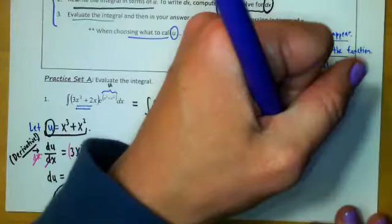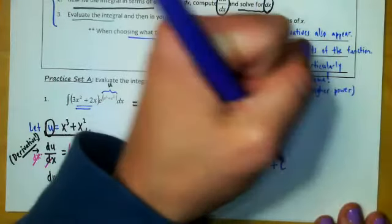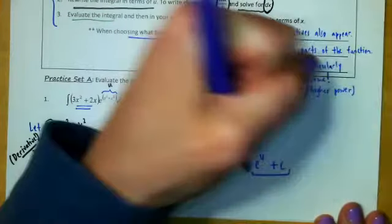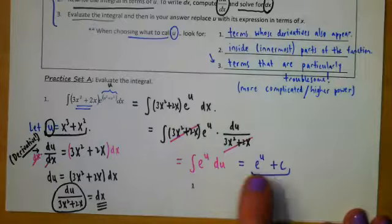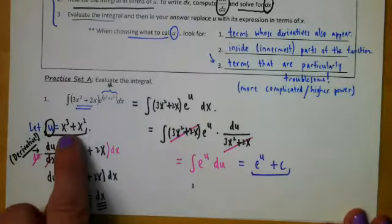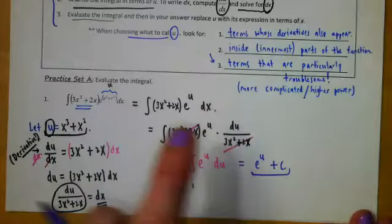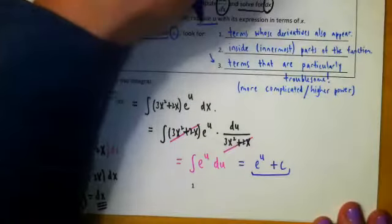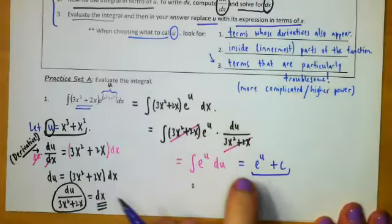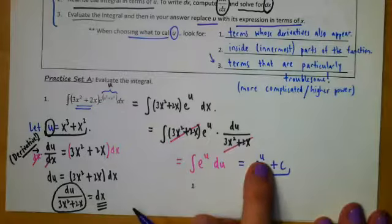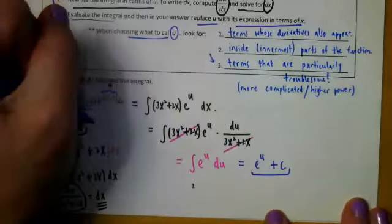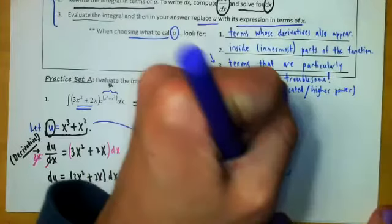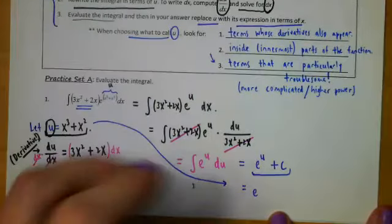The only problem with leaving this is that it is in terms of u. And we want our final answer to be in terms of x. So the last part of step 3 was replace u with its original expression in terms of x. So we're going to go back to this answer. And instead of writing u, we're going to write what we know u equals from what we had originally substituted. So it'll be e to what we said u equals x cubed plus x squared plus c. And that is your solution.